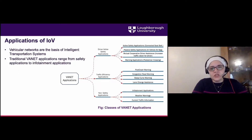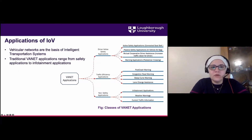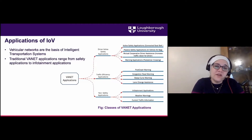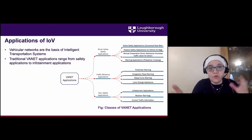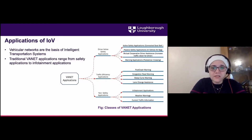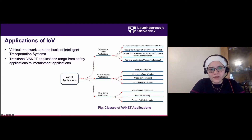Looking at the applications, in one of our papers we classify them into three categories. Category one is driver safety — active applications such as warnings about pedestrians and cooperative driving with the vehicle and driver. Category two is traffic efficiency — for example, warnings when there is congestion or a curve ahead. Category three is non-safety applications, which are not time-critical; their requirements are completely different. A crash warning needs to arrive on time; a weather warning does not.